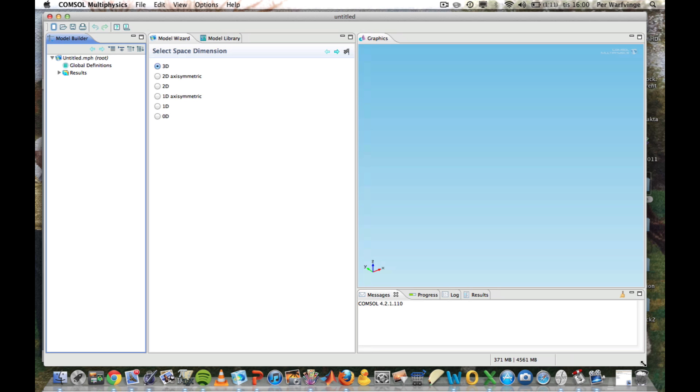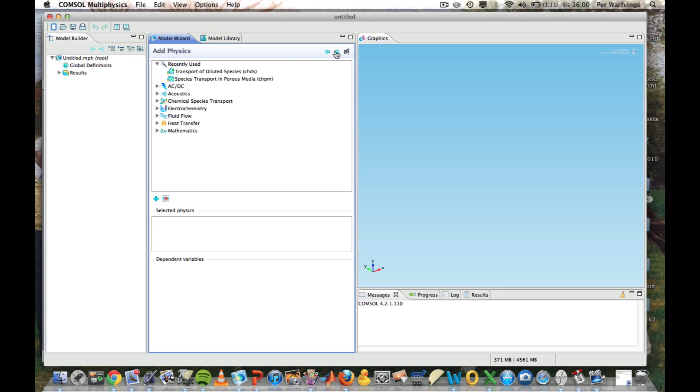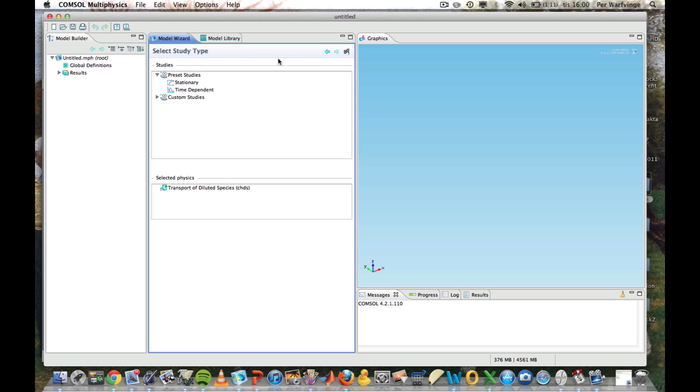This is what we meet when we start COMSOL. The first thing to do is to select the space dimension, which is one-dimensional. The second thing to do is to choose the appropriate physics, in this case, transport of diluted species. And finally, we should make this steady-state calculation. It's called stationary.